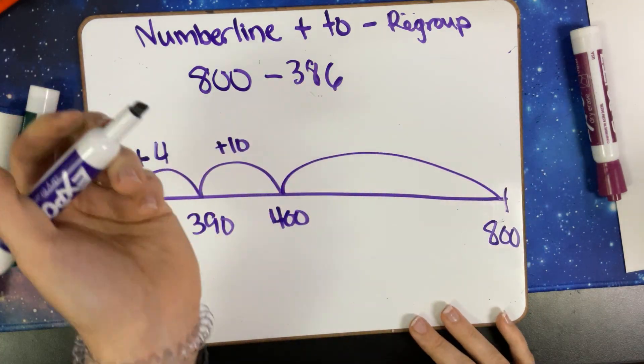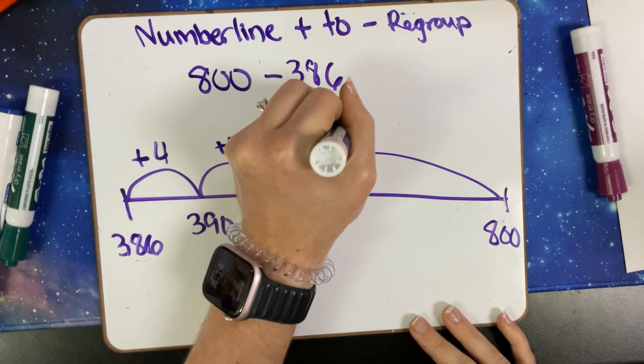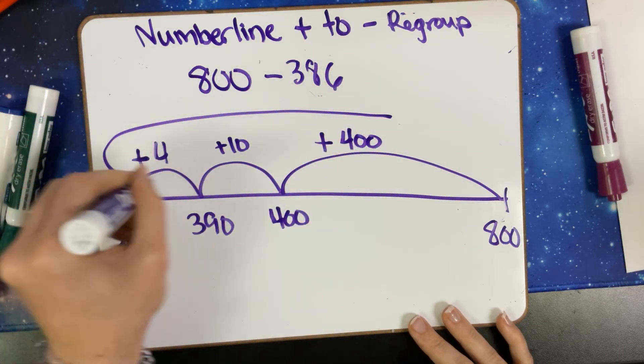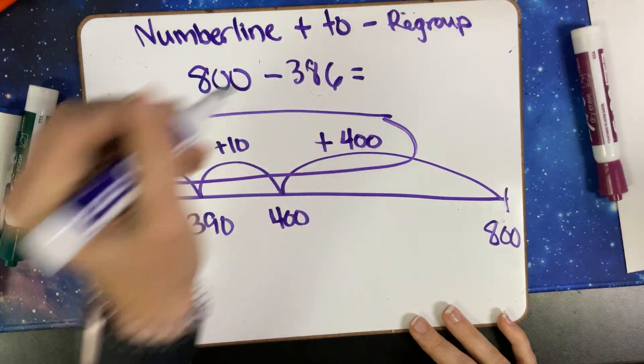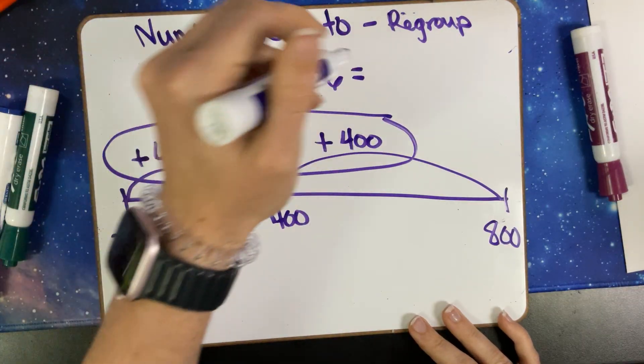Then I'm going to add 400 to get to 800. So our answer will be right on top, being 414.